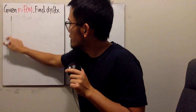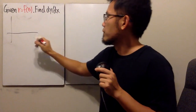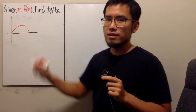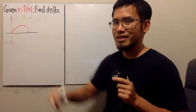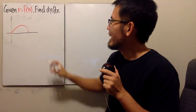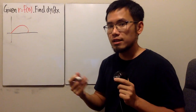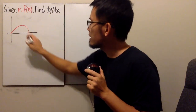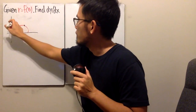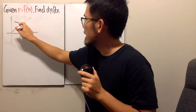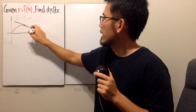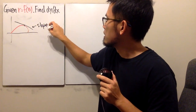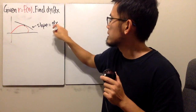Let's say the curve looks like this — it can be really varied. dy/dx represents the slope of the line tangent to the curve at some point. If I graph it, you will see that this is the tangent line, and the slope right here is precisely the dy/dx.